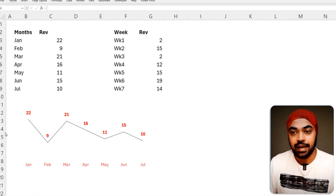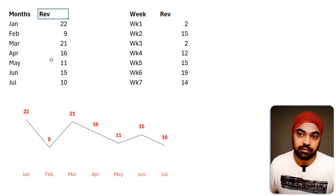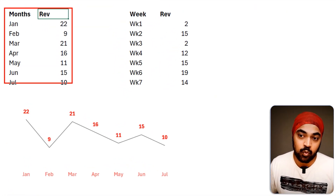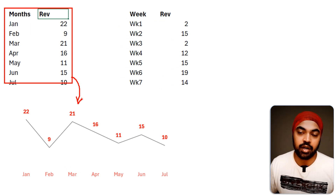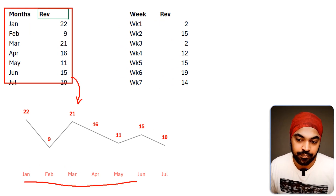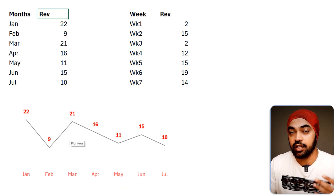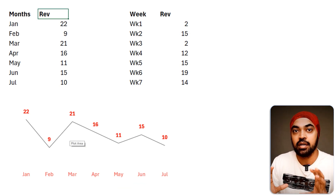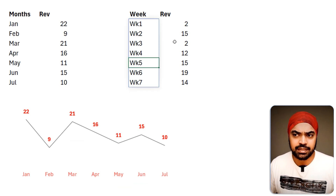Trick number two: chart formatting. Let's say you're building a presentation with many slides containing charts, and you want all the charts to look the same — same formatting, same style. We're working with months and revenue data, and I've already formatted the chart a certain way: red labels, data labels, and so on. The next time I want to make a chart, I select the data and use the shortcut Alt+F1, but the new chart looks nothing like the formatted one.